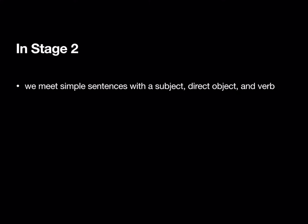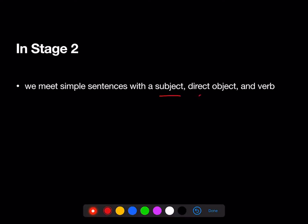Welcome to the Latin 1 Stage 2 Review. In Stage 1, the sentences we saw had a subject and a verb. In Stage 2, we are meeting simple sentences that have a subject, a direct object, and a verb.